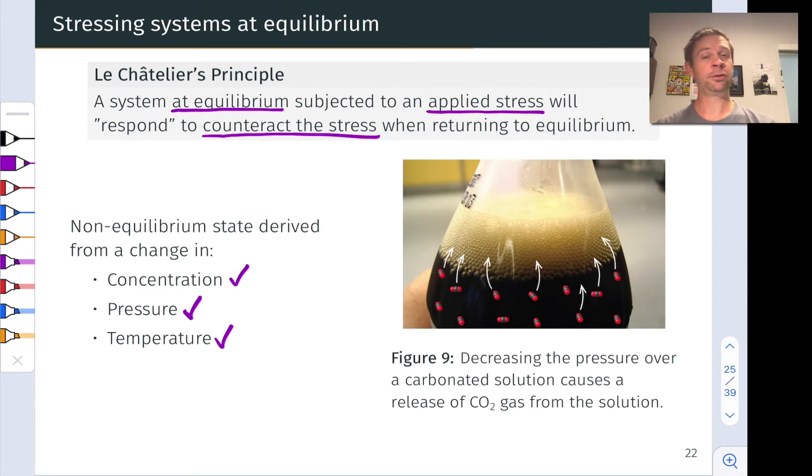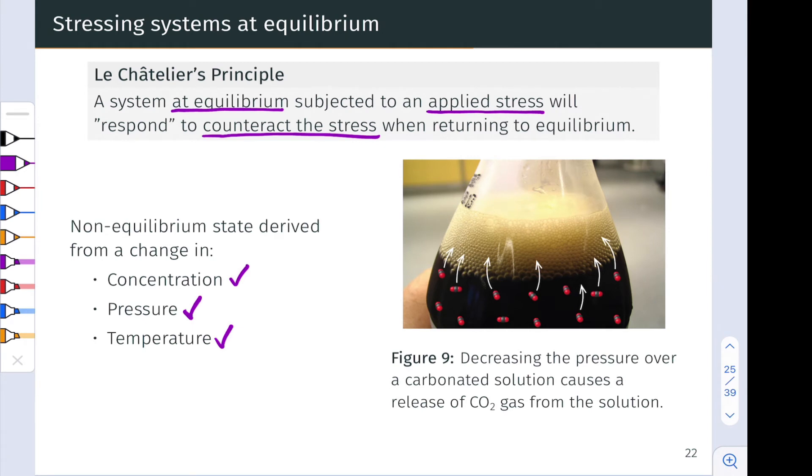Carbon dioxide leaves the solution and becomes gas because gas has left the system. The system is responding to the departure of CO2 gas by generating more CO2 gas from the dissolved CO2 in the soft drink. What we're going to do now is systematically study the impacts of concentration, partial pressure, and temperature on systems and see how Le Chatelier's principle allows us to predict which direction a system will move in response to one of these applied stresses.